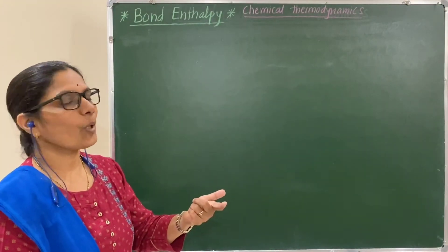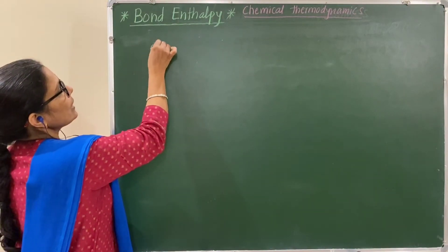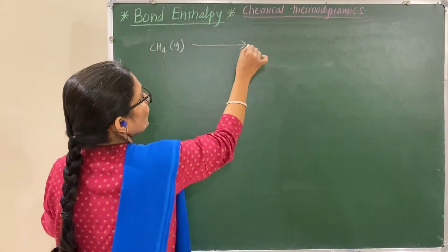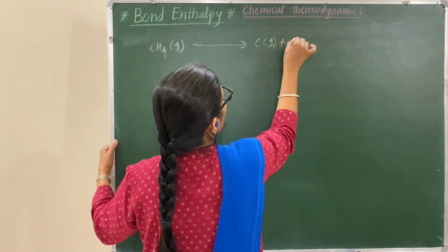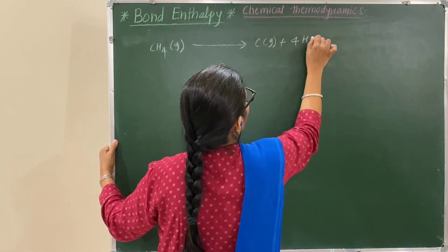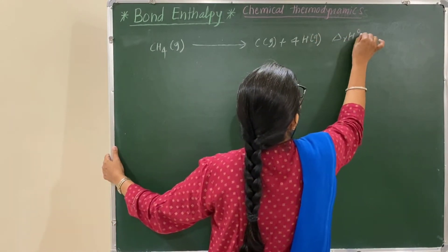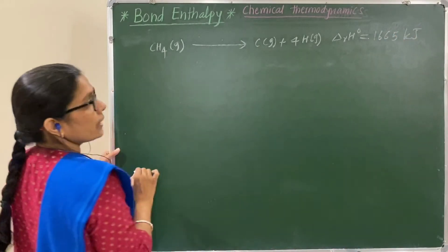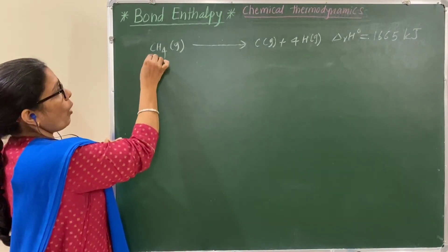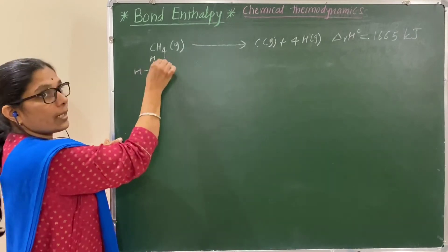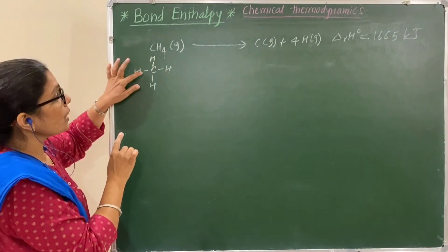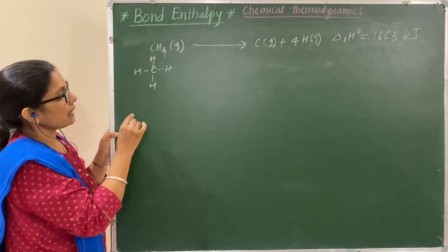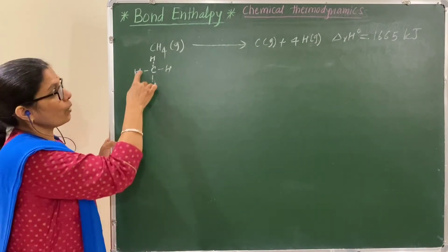Consider one more example of a polyatomic molecule: methane. Methane in the gaseous state — one mole — decomposes into carbon in the gaseous state and four hydrogen atoms in the gaseous state. The change in enthalpy for this reaction is 1665 kilojoules. The four C–H bonds in methane are identical, but the energy required to break each bond — that is, the bond enthalpy — is different. Since four bonds are available, we require four steps.